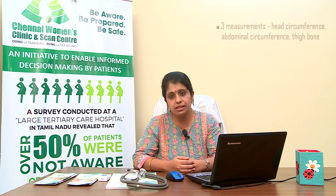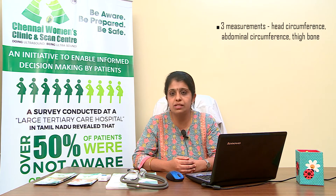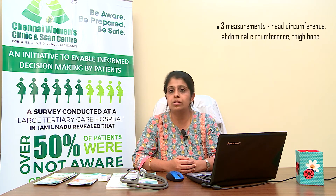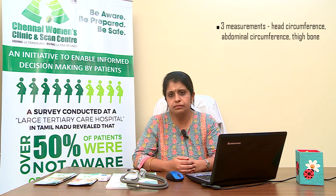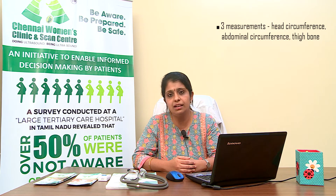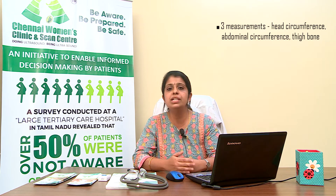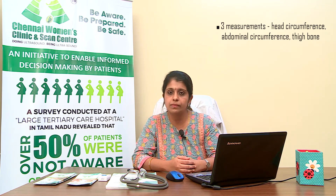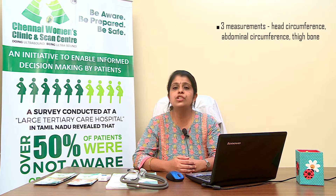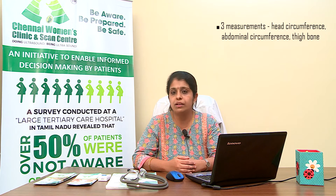So what in all can we identify in an anomaly scan? First, we measure the baby — the head circumference, the abdominal circumference, and the baby's thigh bone length. All three measurements are taken and the baby's weight is plotted in a graph. After which, we check on the vital organs of the baby.